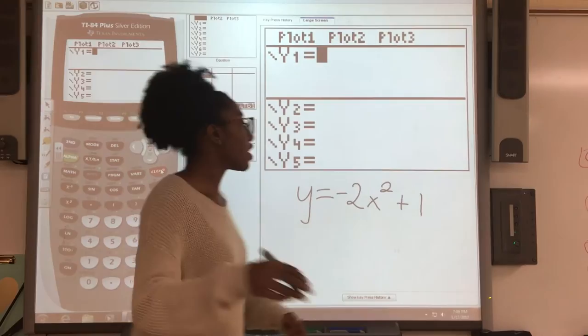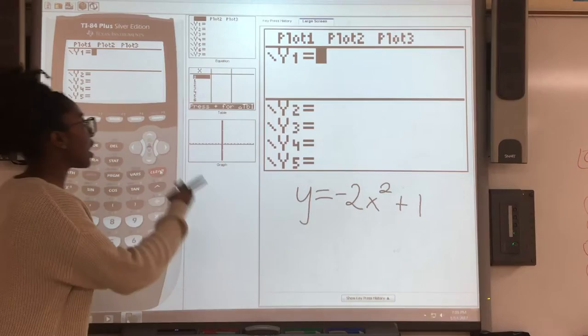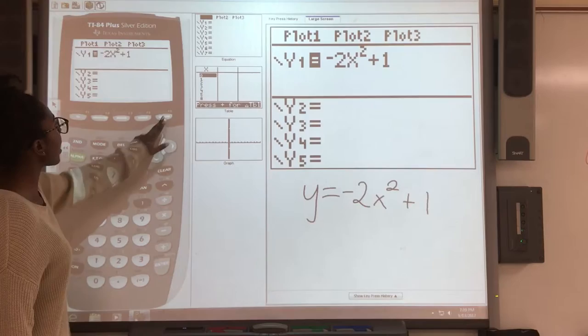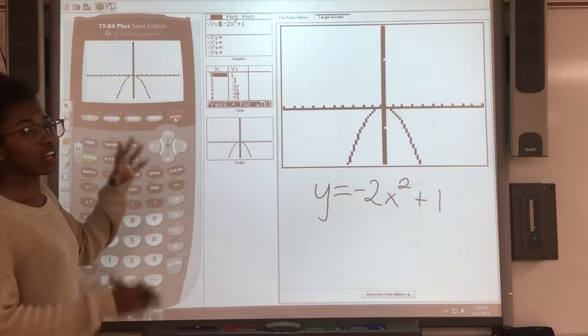Now we're going to get into some quadratics. We have a simple one: y equals negative 2x squared plus 1. I'm going to plug it into y equals. Negative 2, then I'm going to do x, change this little x squared button right here, use x squared, and then plus 1. I'm going to graph that.